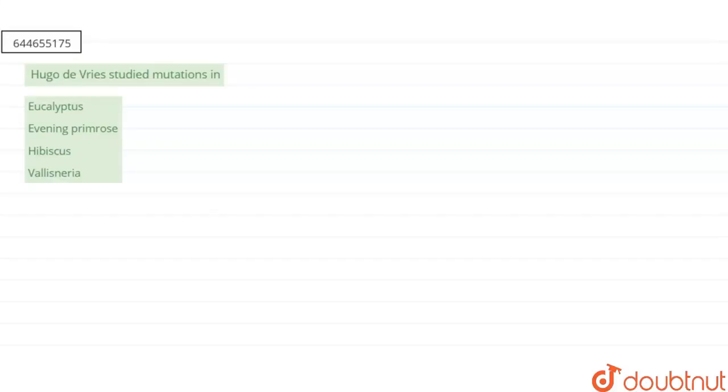Our question says that Hugo de Vries studied mutation in: first is Eucalyptus, second is Evening Primrose, third is Hibiscus, and fourth is Vallisneria. So this question is regarding the scientist Hugo de Vries.